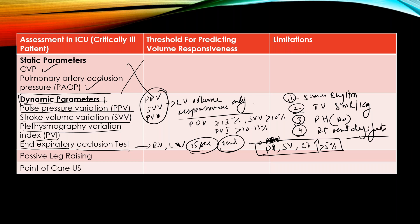Sometimes critical care physicians perform a tidal volume challenge test. During this test, the tidal volume is transiently increased to 8 ml per kg ideal body weight for one minute while the patient is on the ventilator. Then pulse pressure variation and stroke volume variation are checked. In the appropriate clinical setting, if they are increasing, volume status or volume responsiveness can be assessed.